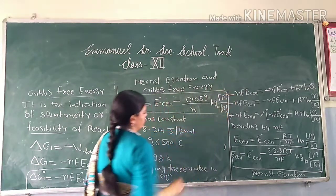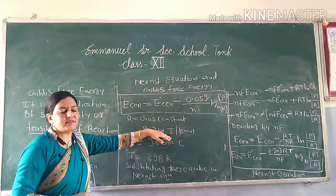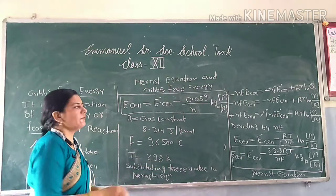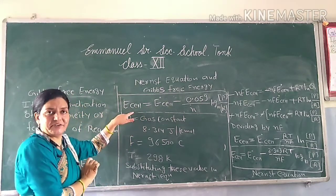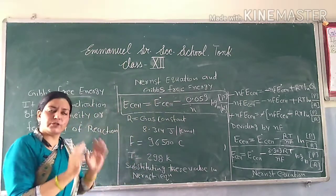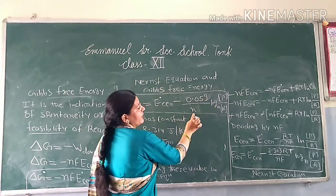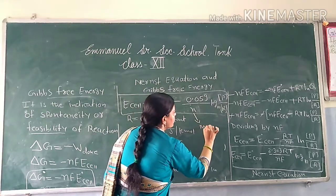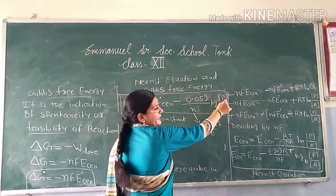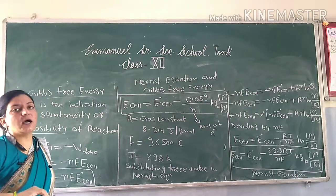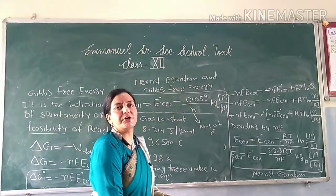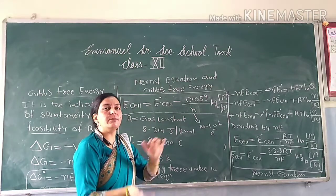If all these conditions — gas constant, Faraday constant, and temperature — are fixed at standard values, we directly write the Nernst equation as: E_cell = E°_cell − (0.059/n) × log Q, where n is the moles of electrons reacting. This is how we calculate the non-standard cell potential and how the Nernst equation is related to Gibbs free energy — two most important topics. This finishes the Nernst equation.